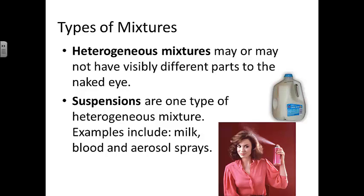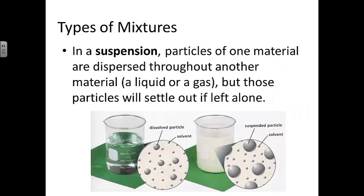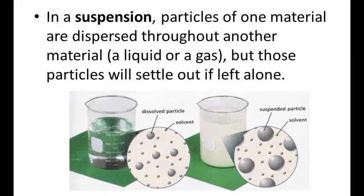Heterogeneous mixtures may or may not have visibly different parts to the naked eye. Suspensions are one type of heterogeneous mixture. Examples of suspensions include things like milk, blood, and aerosol sprays, where we can't see the visibly different parts unless we look at them underneath the microscope.